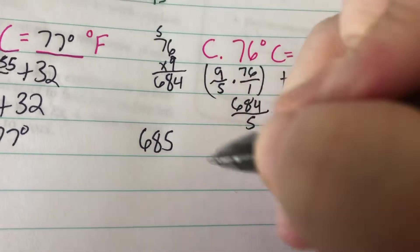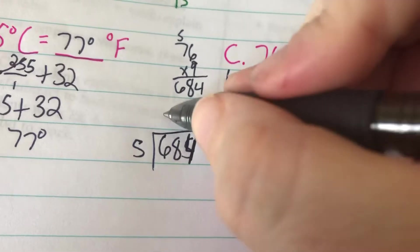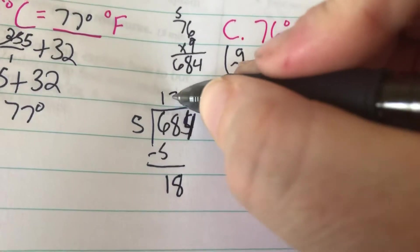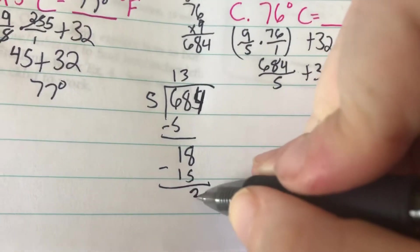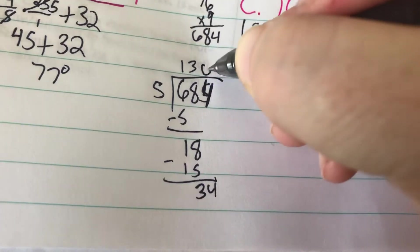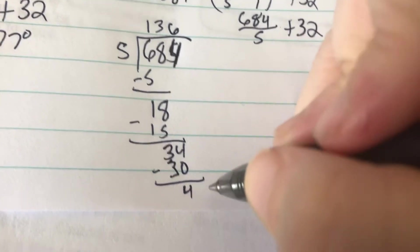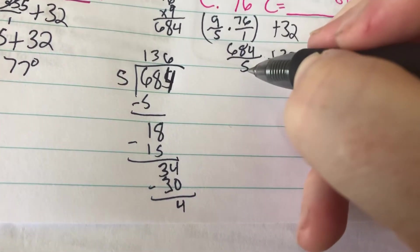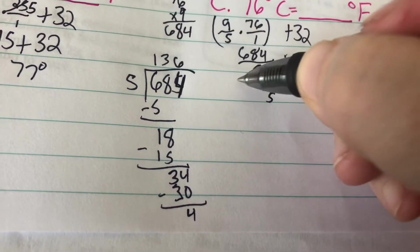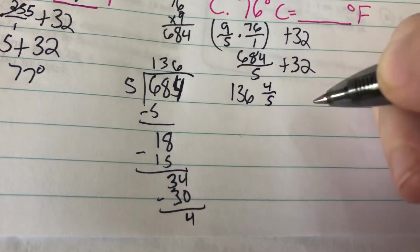Then we'll be putting that 684 over 5 times 1. So 684 over 5 plus 32. 5 will not go into 684 evenly, but we can still make that a proper mixed number. So 684 divided by 5. 5 into 6 is 1. Subtract is 1. Bring down my 8. 5 into 18 goes 3. 3 times 5 is 15. 3. Bring down my 4. 5 into 34 is 6. 6 times 5 is 30. Subtract, 4. My original denominator was 5. My whole number is 136. My numerator is the remainder, which is 4.